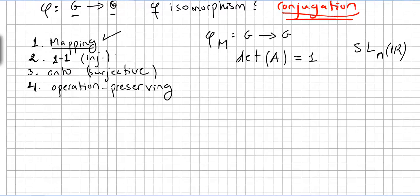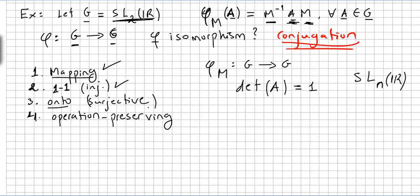We checked mapping and injectivity. Now let us check if this mapping is onto. We pick a matrix B in G — B is in the codomain G — and we ask: for each B in G, is there an A in G such that phi of M of A equals B?